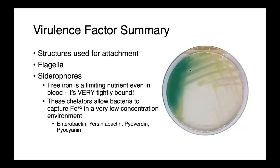Siderophores, or iron scavenging proteins, are very important. As mentioned, free iron is oftentimes a limiting nutrient, even in blood — it's very tightly bound by host proteins. Siderophores act as chelators that allow bacteria to capture free iron. Examples include enterobactin, yersiniabactin, pyoverdin, and pyocyanin. This plate of Pseudomonas aeruginosa shows a nice green color, which is the result of the pyoverdin pigment — a siderophore.